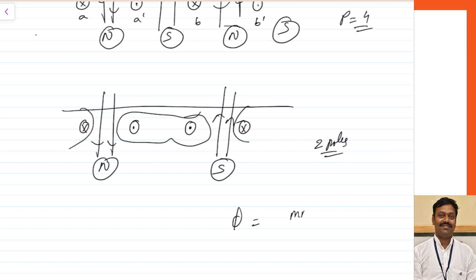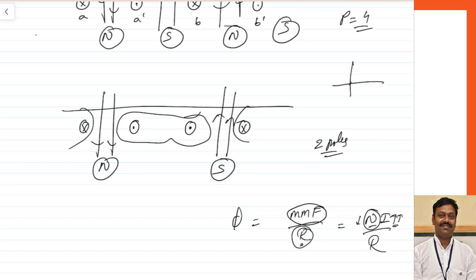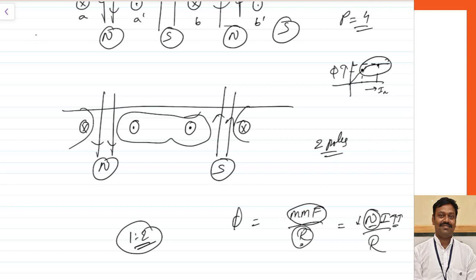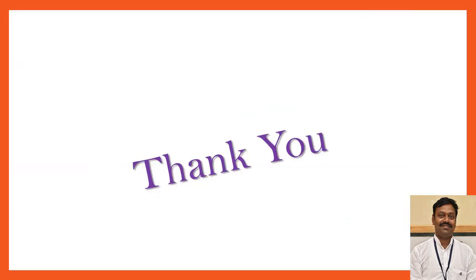We cannot change the number of poles drastically because the flux φ = mmf / reluctance, and since the reluctance of the magnetic circuit is generally constant, it depends on mmf = n × i. If you increase the number of poles, the number of turns decreases, so you must increase current to compensate. However, since the flux-current relationship is initially linear and then goes into deep saturation, and the motor already operates around the saturation region, increasing current drastically only gives a small change in flux. That is the limitation, and that is why this method can only be used in a 1:2 speed ratio. I hope this is completely clear; if you have any queries, please leave your comments below. Thank you.